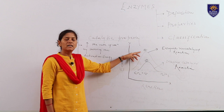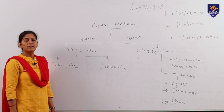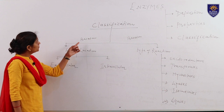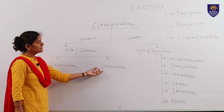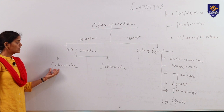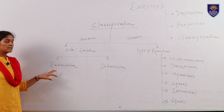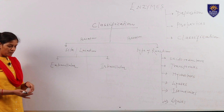Now the next topic is the classification of enzymes. Enzymes are classified in two ways: depending upon their site as well as the type of reaction they carry out. Depending upon their site, they are classified into extracellular enzymes and intracellular enzymes. Extracellular means outside the cell — enzymes which are produced outside the cell and perform their function outside the cell are called extracellular enzymes, also known as exoenzymes. For example, digestive enzymes.